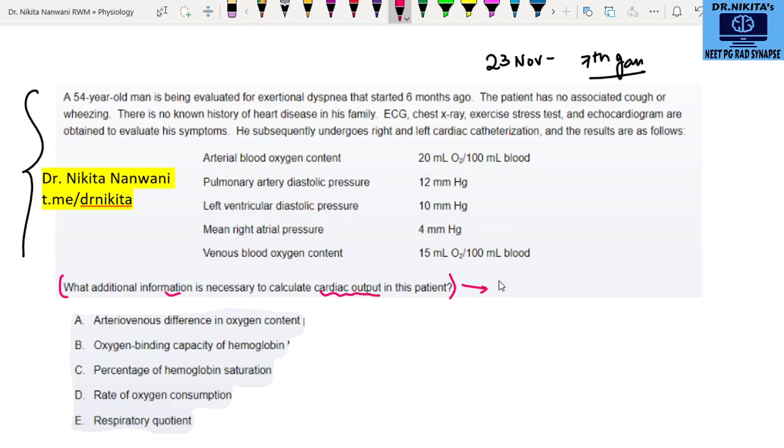So when you read the statement, you know, we know that cardiac output is generally calculated as heart rate into stroke volume, that is one. But there is other formula also which is based on the Fick principle.